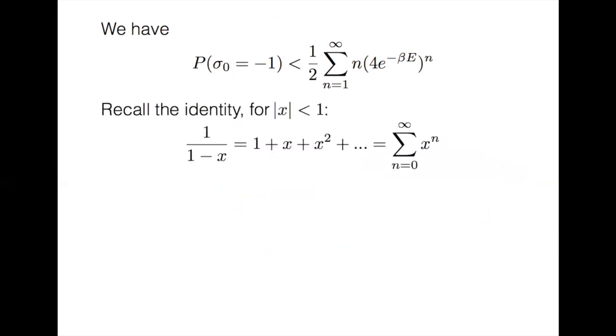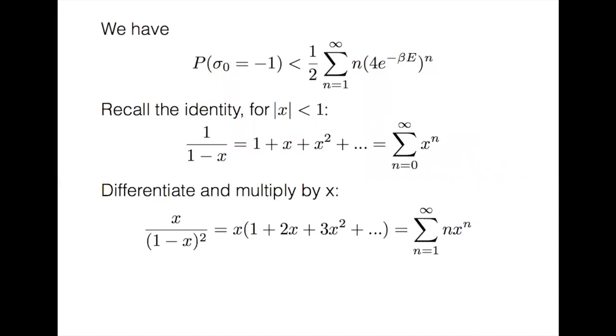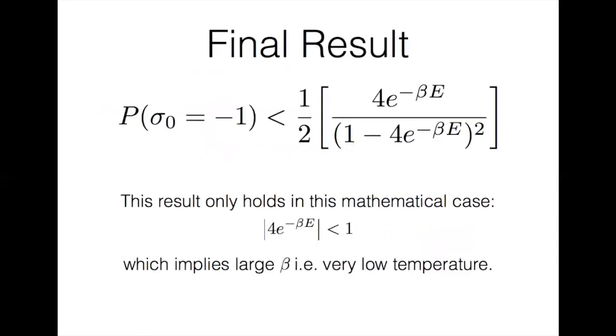So now we're going to look at the identity for a geometric series. Which states that for the absolute value of x less than 1, the sum of that geometric series is 1 over 1 minus x. If we take this equation, differentiate, and then multiply by x, we get an infinite sum in the same form as we have in our probability. We can then let x be 4 times e to the negative beta e, and we get a final result, which states that the probability that sigma naught is a downspin is less than 1 half times 4 times e to the negative beta e over 1 minus 4 e to the negative beta e quantity squared.